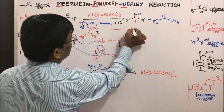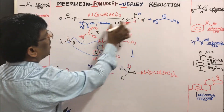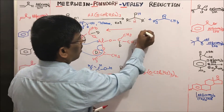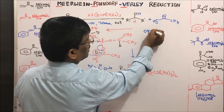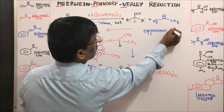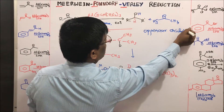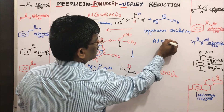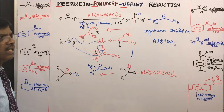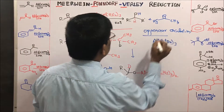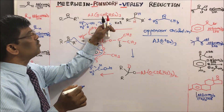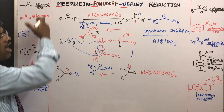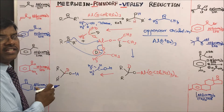The reverse reaction — converting alcohol back to ketone or aldehyde — is known as Oppenauer oxidation. In Oppenauer oxidation, aluminum tert-butoxide is used. Let us now see the various application examples of MPV reduction.